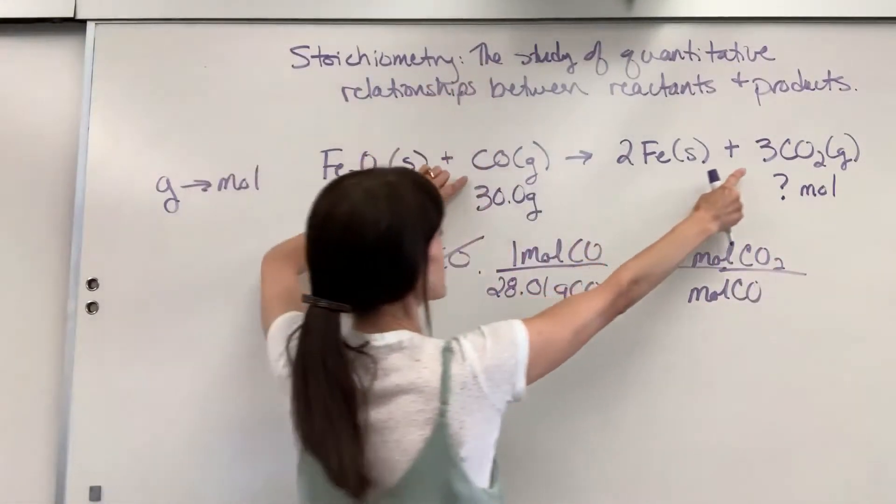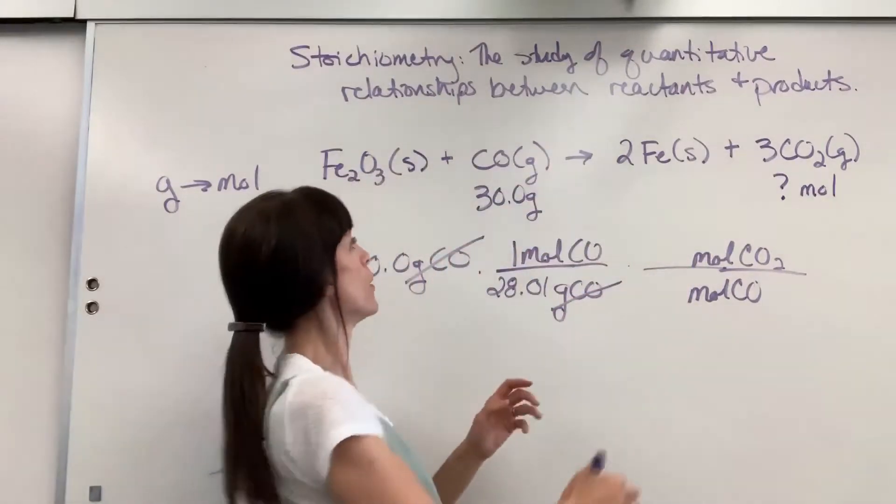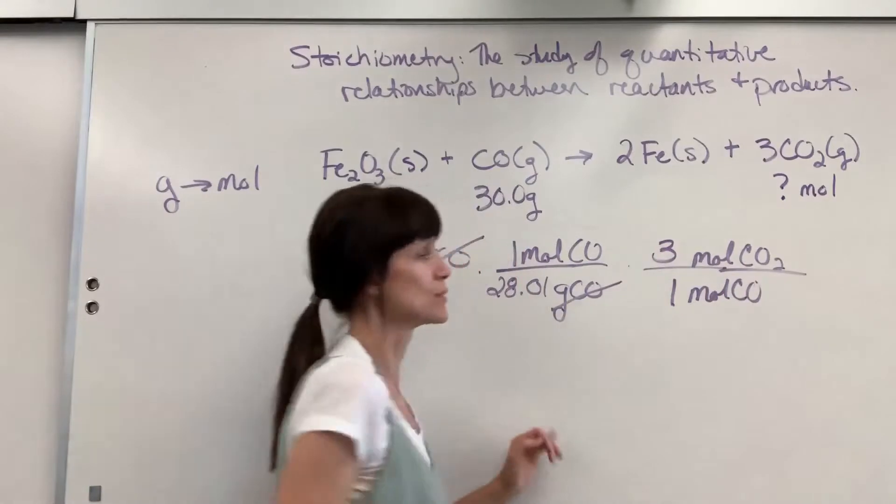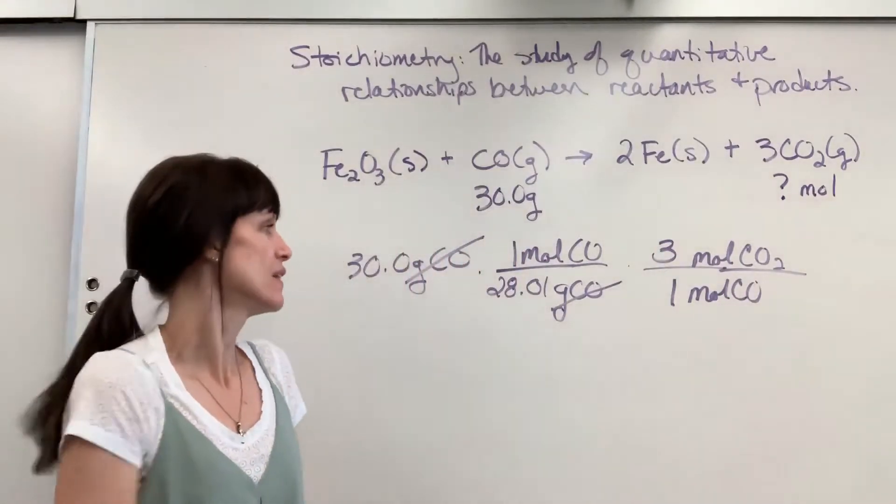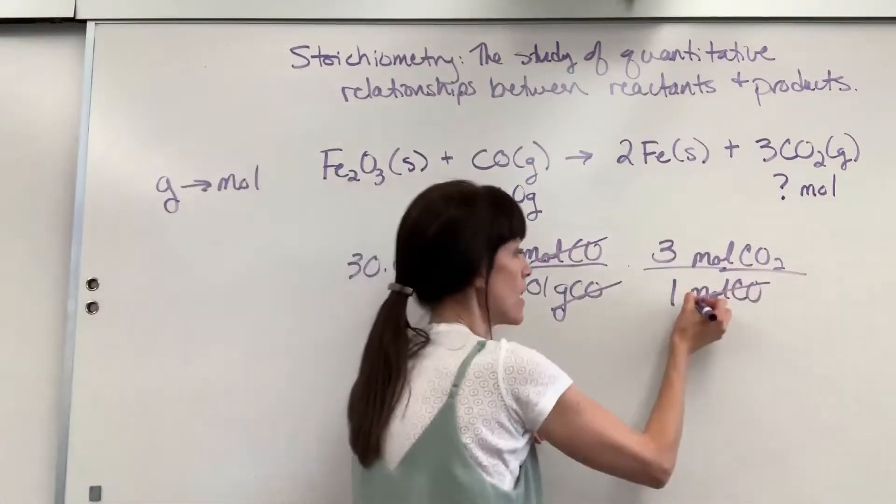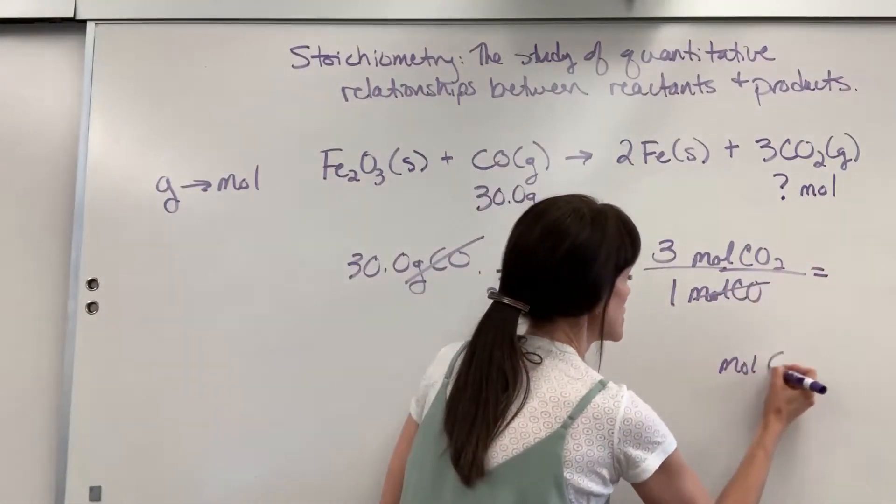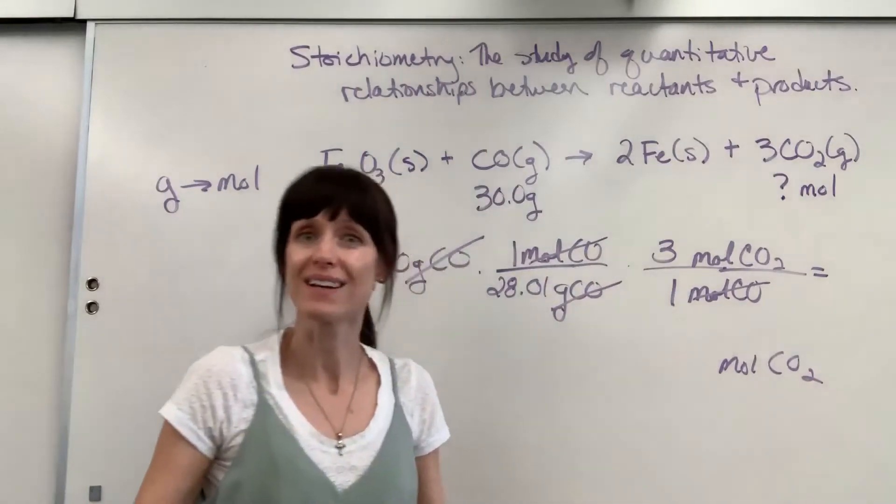Now we just look at those molar coefficients and attach them. One mole of carbon monoxide is going to produce 3 moles of carbon dioxide. Check it out. Moles of CO cancel and we will be left with moles of CO2 and that's what I wanted.